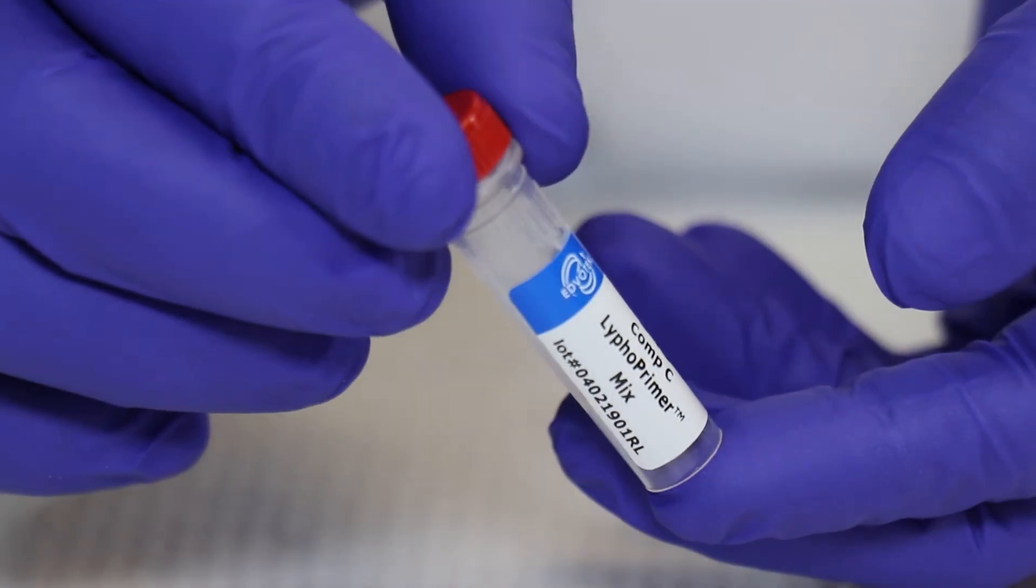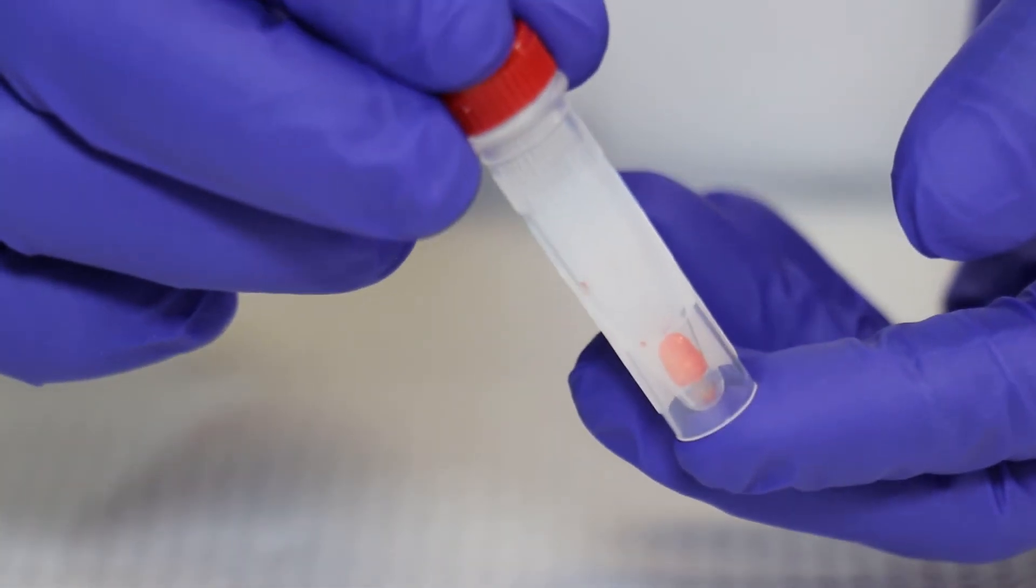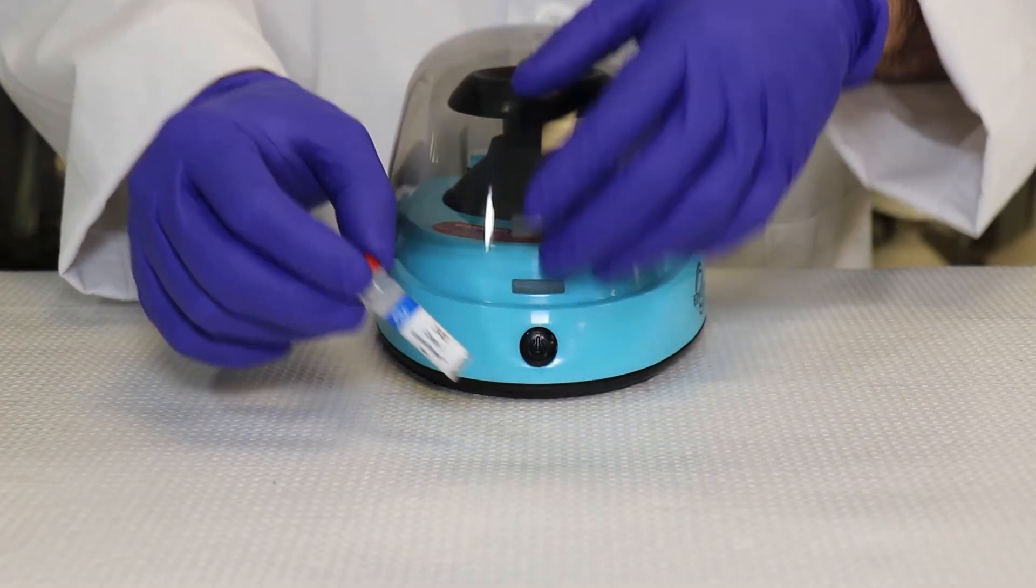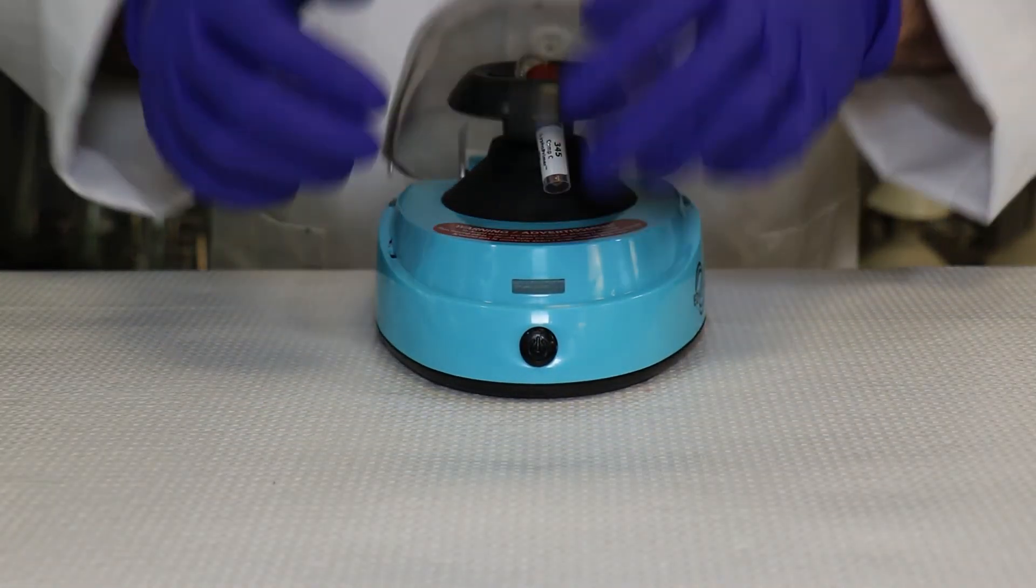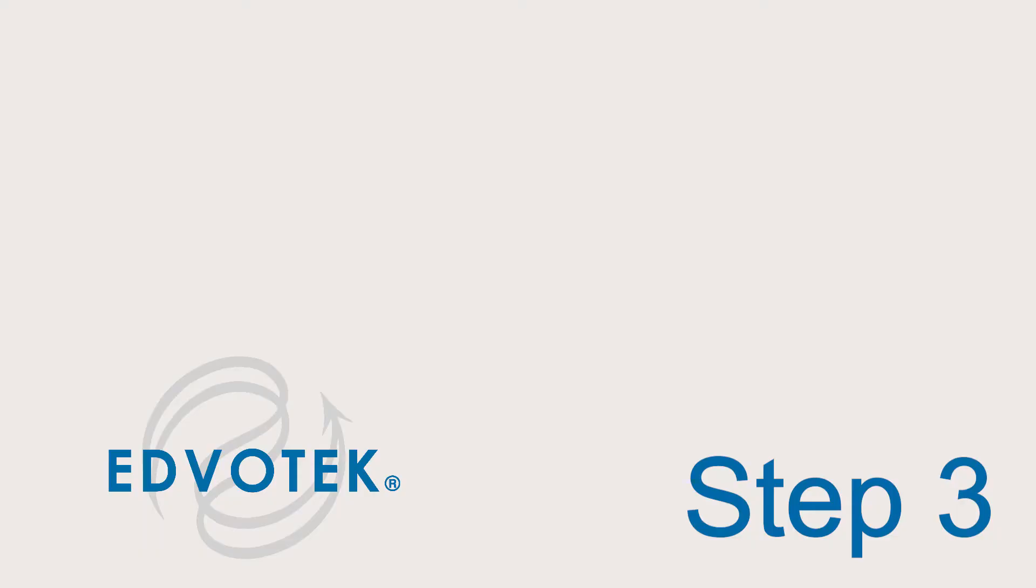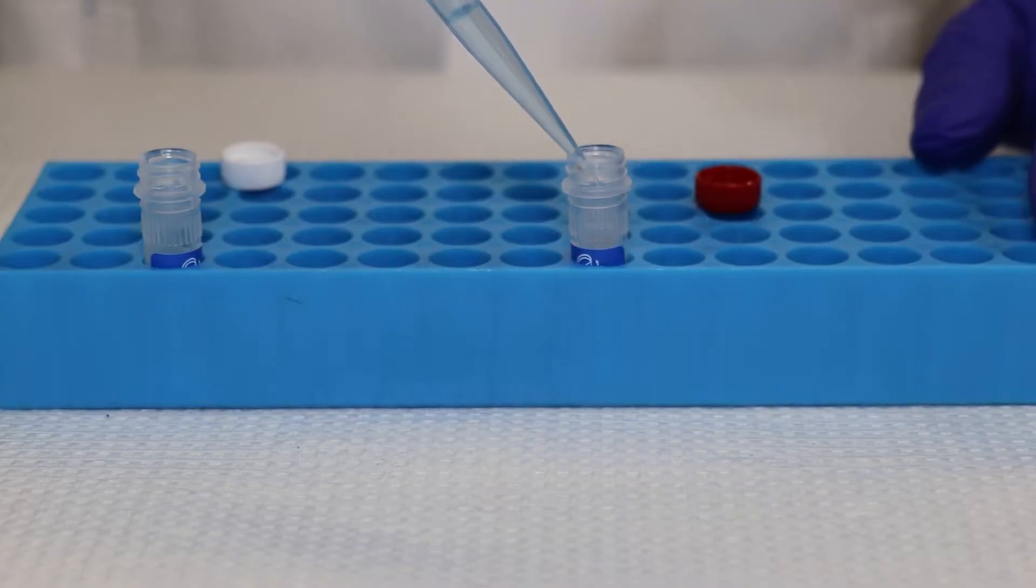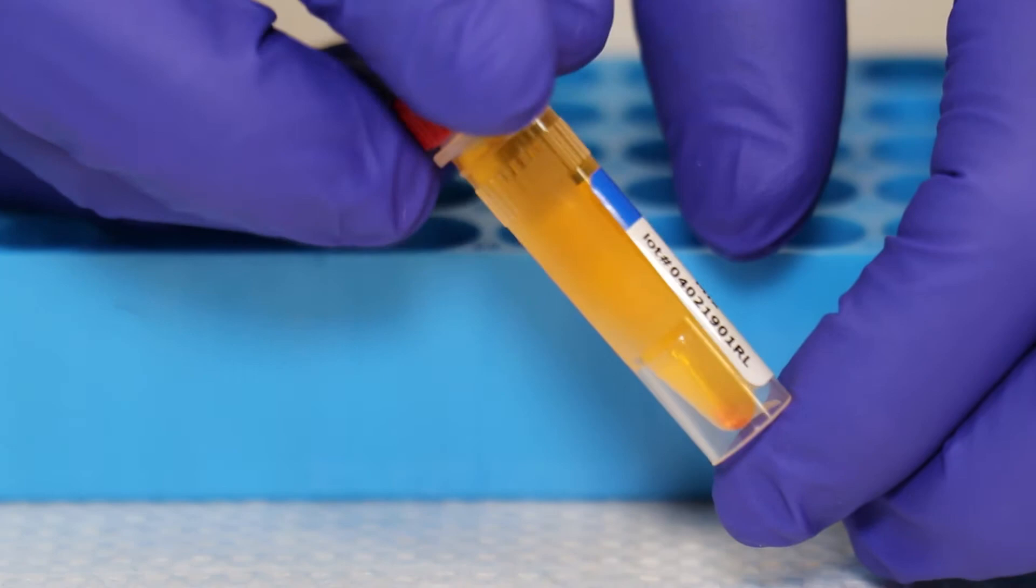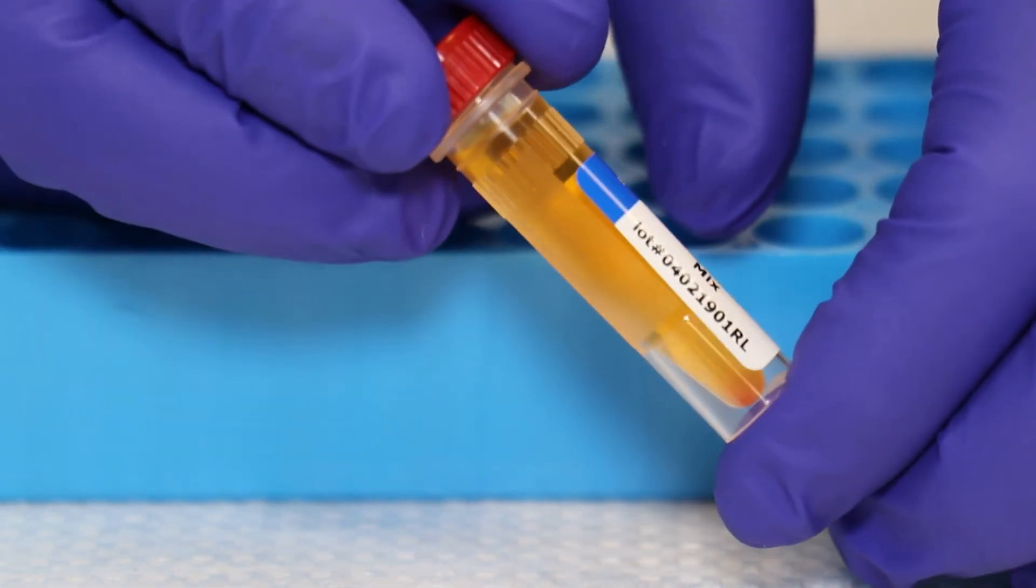Step 2: ensure that the lyophilized solid is at the bottom of Component C lyophilized primer tube. If not, centrifuge the tube at full speed for 10 seconds. Step 3: add 1.2 milliliters of Component B TE buffer to the lyophilized primer tube, cap and mix well, then place on ice.